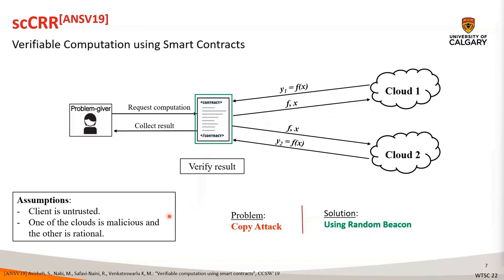They assume that the client is untrusted, one of the clouds is malicious, and the other is rational. However, they noted that a direct implementation of CRR using a smart contract will result in a new attack called the copy attack, that allows free-riding to a dishonest cloud. A solution to the copy attack problem was also proposed using a random beacon, where the smart contract sends two random queries to two servers for an item in the Merkle tree of that server. In response, the servers need to return a Merkle proof for the query index. Then the smart contract verifies the Merkle proofs and detects the copying party, since the copying party will not be able to generate a valid proof. Although this is a good approach to catch the copy attacker, the implementation of this protocol was left as future work.